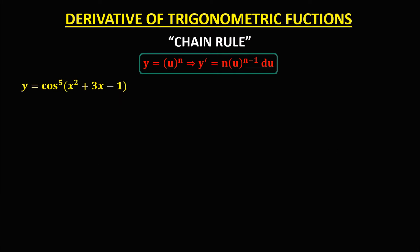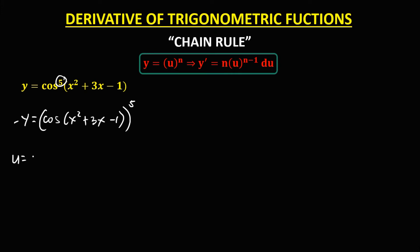For this next given, we first need to rewrite it. So y equals cosine of (x squared plus 3x minus 1), then to the power 5.